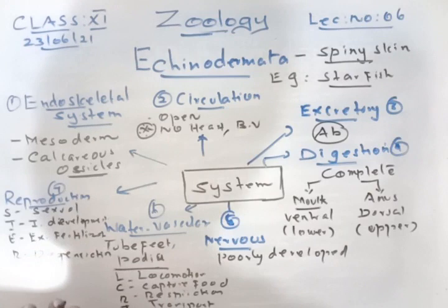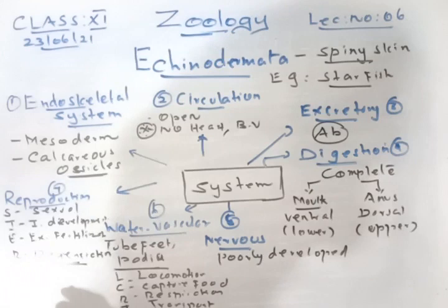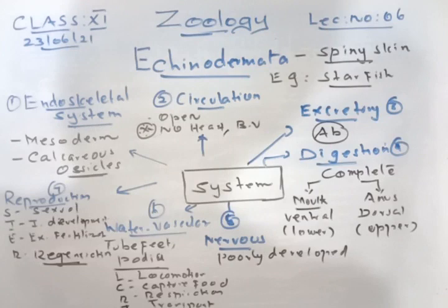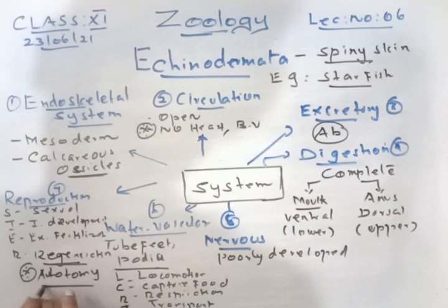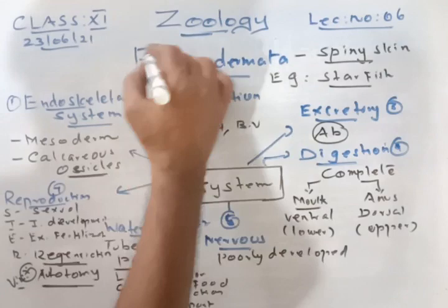The process of self-cutting body parts and then regenerating them is called autotomy. For example, a lizard cutting off its tail. This regeneration via autotomy is a characteristic feature of Echinodermata.